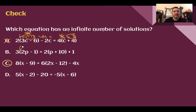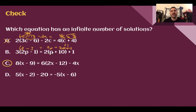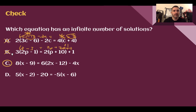For B: distributing gives 6P minus 3 equals 2P plus 20 plus 1, so 6P minus 3 equals 2P plus 21. If I subtract 2P from both sides, I still have a variable left over — I can still solve for it. This has one solution, so it's not B. We know C was the right answer.